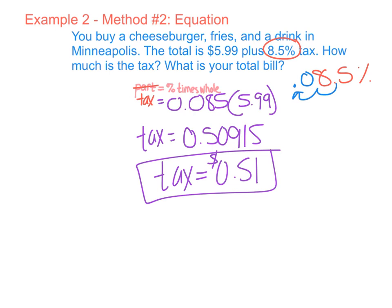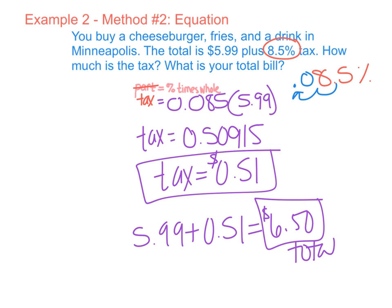And then again to find our total bill, add that together. This step is the same no matter which of those two methods you use. So we end up with $6.50 total.